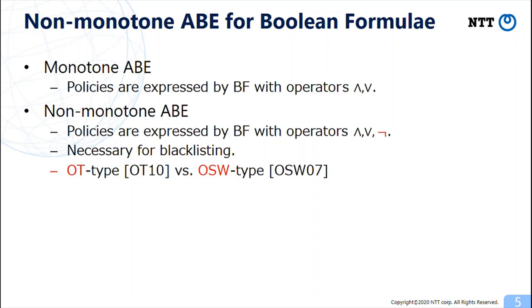There are two types of non-monotone ABE schemes. One is called OT type by Okamoto and Takashima. And the other is called OSW type by Ostrovsky, Sahai, and Waters. Next, we explain the difference of these two types.